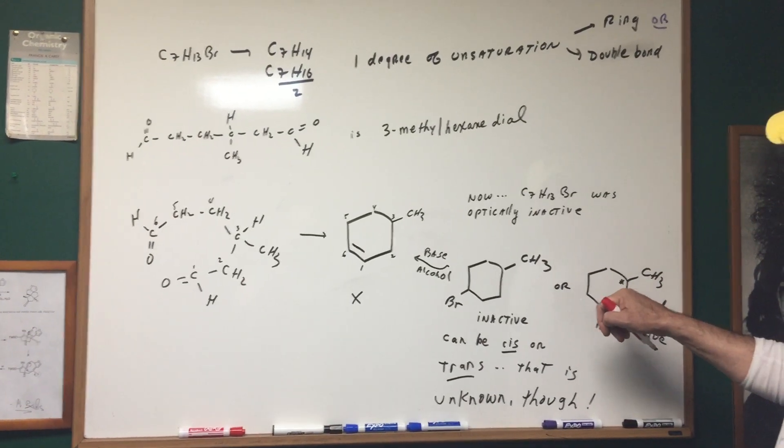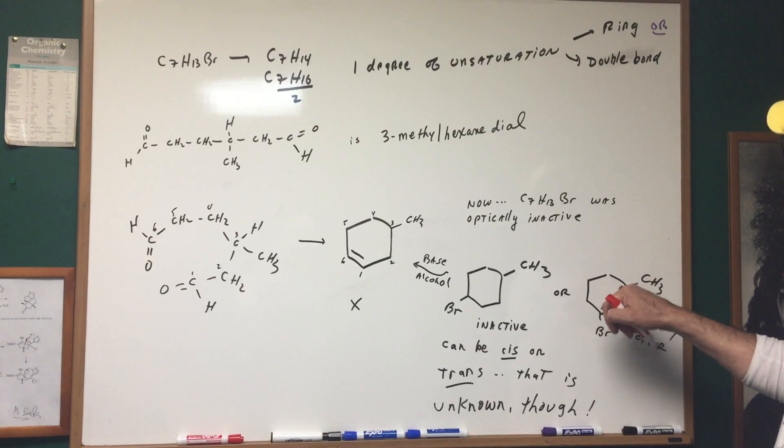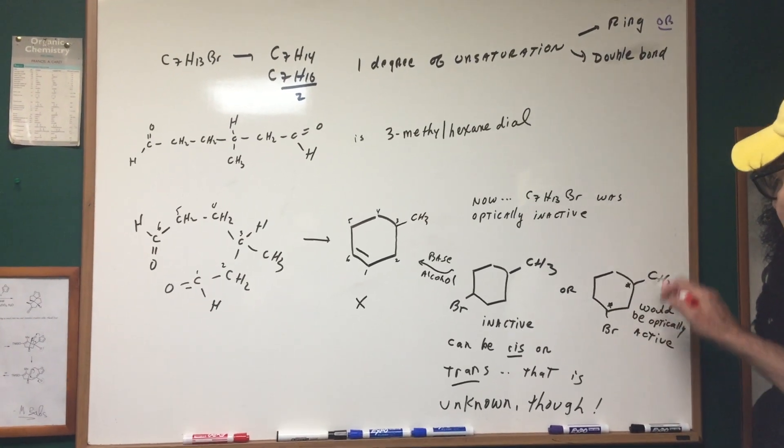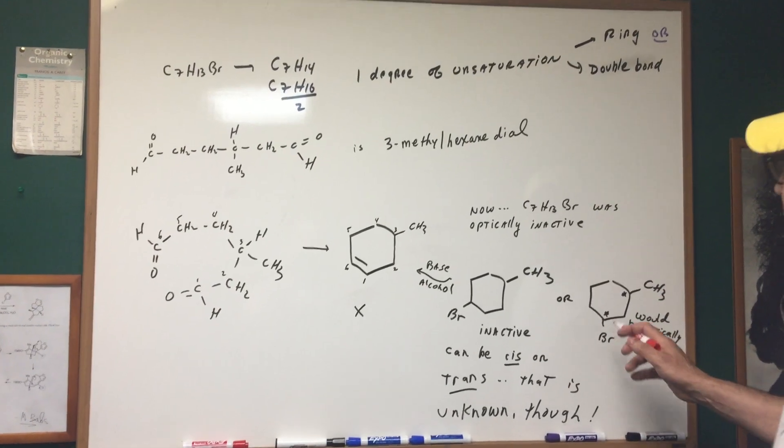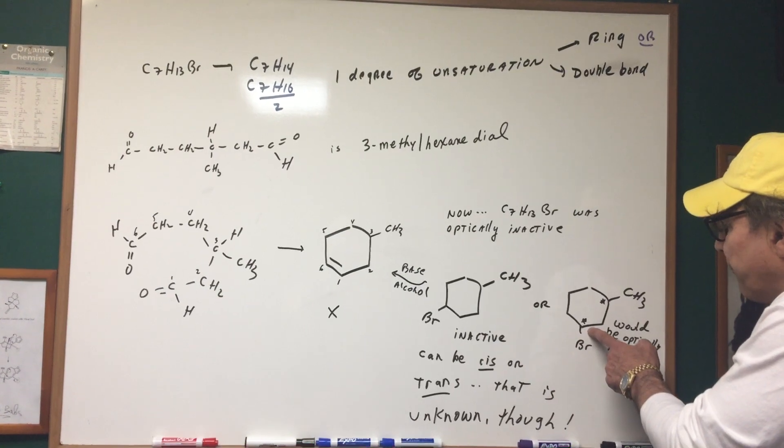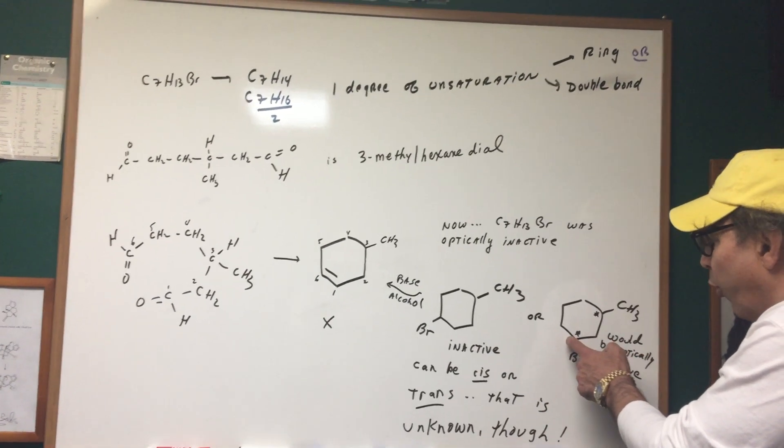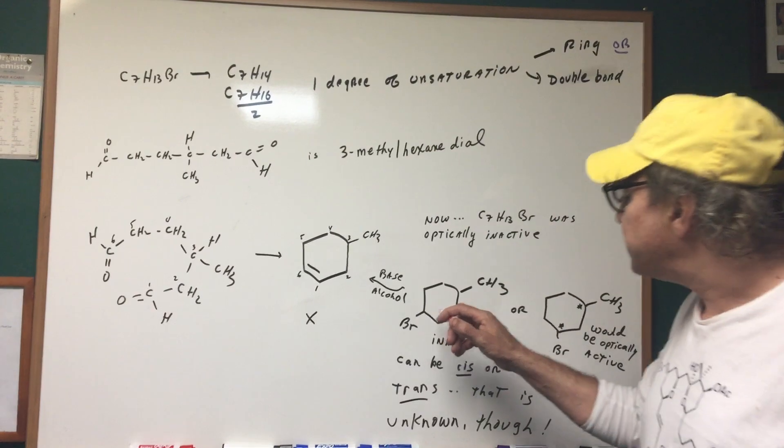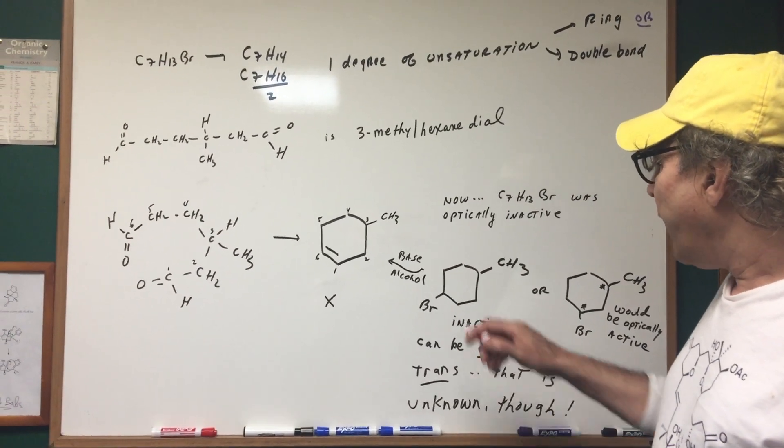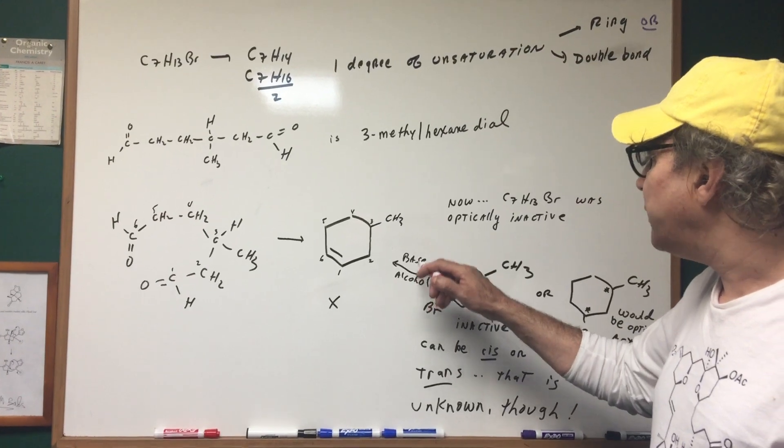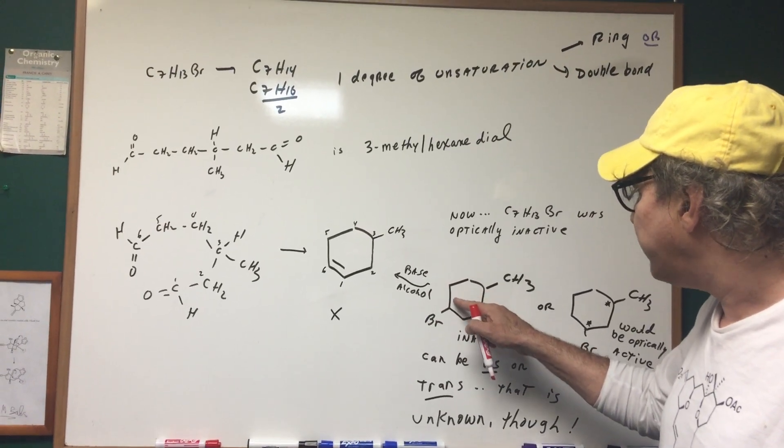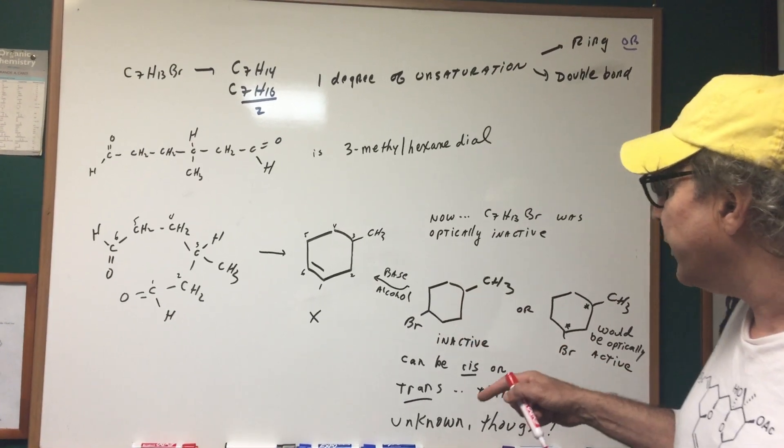Right off the bat, this is wrong because there's a chiral carbon here and there's a chiral carbon here. And this would be optically active. And besides, when you treated this with a strong base, you could have put the double bond here or you could have put the double bond here. If it was this one, first of all, this is inactive. And secondly, if you treated it with T-butoxide, you could have laid the double bond here or here, which would be equivalent.